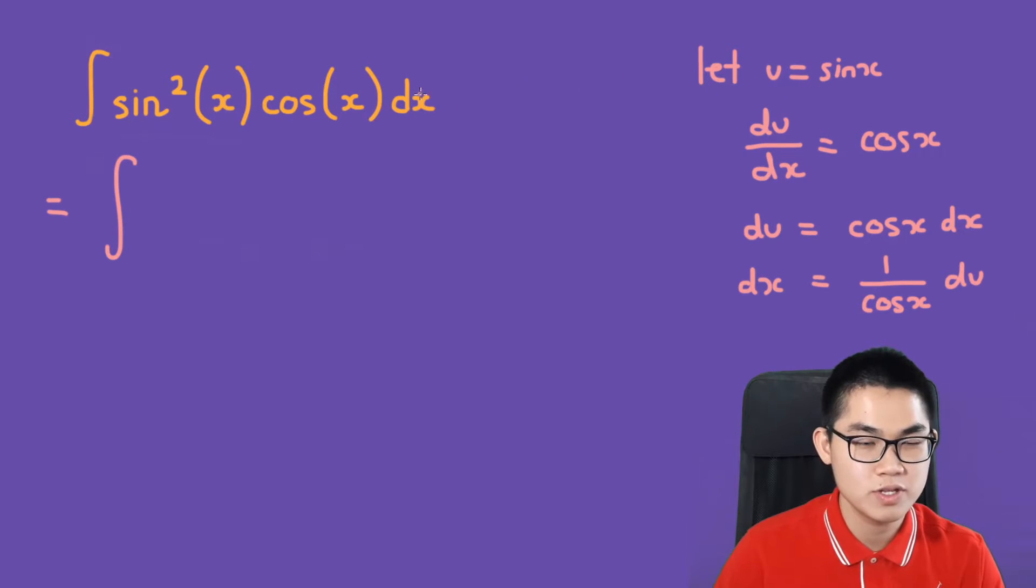We're going to substitute u into this and we get u² times cos(x) times dx, and dx is 1/cos(x) times du.